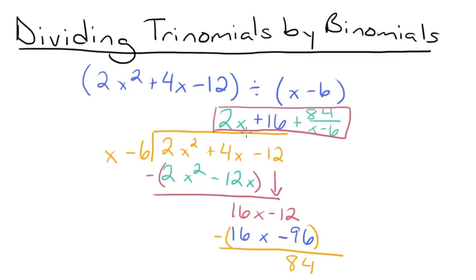Just as a disclaimer, for all of these examples we've had a remainder. But sometimes things will divide out nice and evenly and not have any remainder. So if you get a zero at this last step, you won't have a remainder and you don't have to worry about the fractional part. But if you do have a remainder, it's nothing to be concerned about — it's just a simple extra step that you now know how to do. I hope that this video on dividing trinomials by binomials was helpful. Thanks for watching, and happy studying!